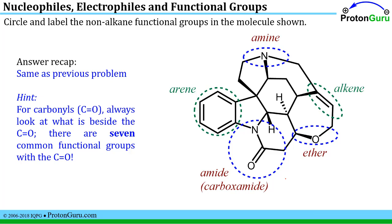You look for those heteroatoms, like the nitrogens or the oxygens in these structures, and then you label them up. One hint: whenever you see this carbon-oxygen double bond, which is called a carbonyl unit, you've got to look for what's beside it. If I have a carbon on one side and a nitrogen on the other, that's known as an amide or a carboxamide. It's important to look next to that carbon-oxygen double bond, because there are actually seven common functional groups — ketones, aldehydes, et cetera — that all share that common C=O carbonyl unit.